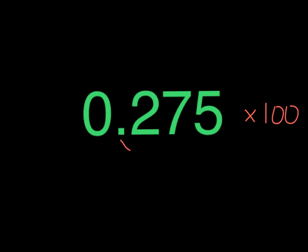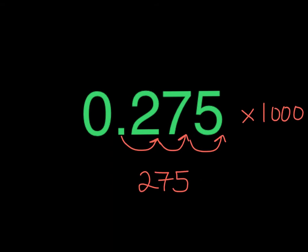If we multiply 0.275 times 100, we will move the decimal point 2 times to the right. And if we multiply 0.275 times 1,000, we would move the decimal point 3 times to the right, and we would get 275. You can see the pattern.